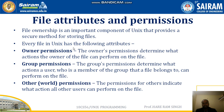Every file in Unix has the following attributes. First is ownership — owner permission. Owner permission determines what action the owner of the file can perform on the file. Suppose if I create a file, then I will be the owner of the file. The owner can have three kinds of permissions: write, read, and execute. Owner permission determines what action an owner can take on the file.